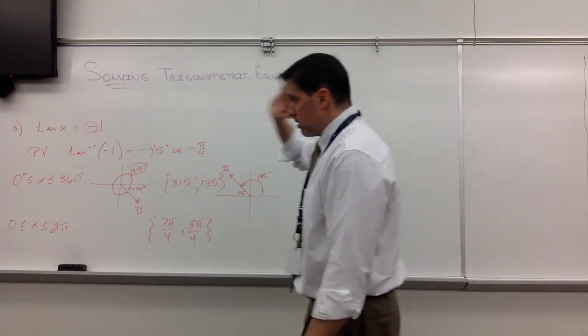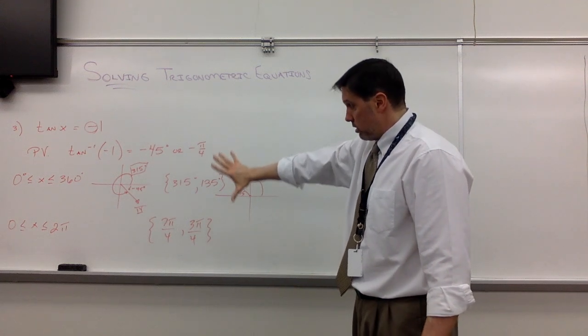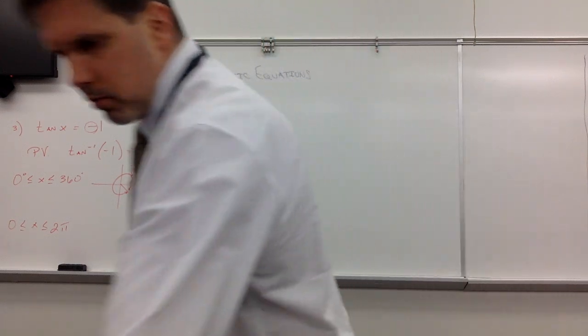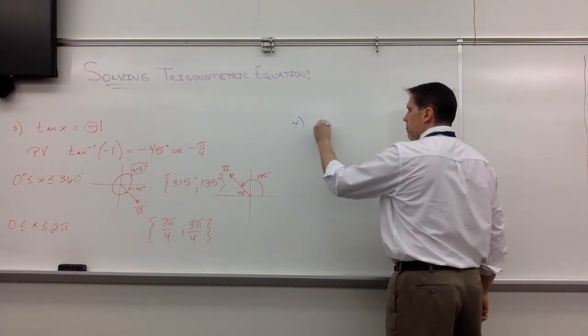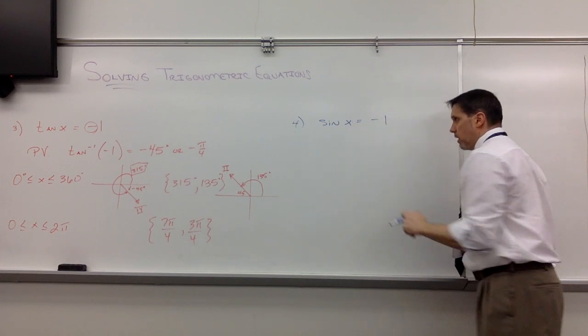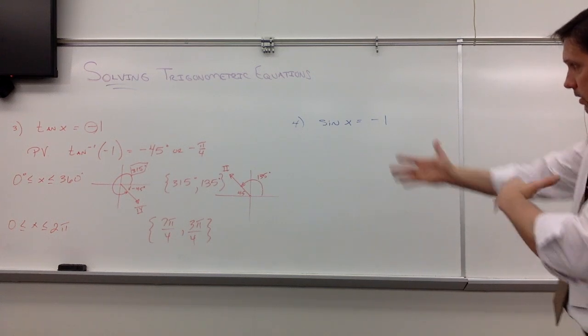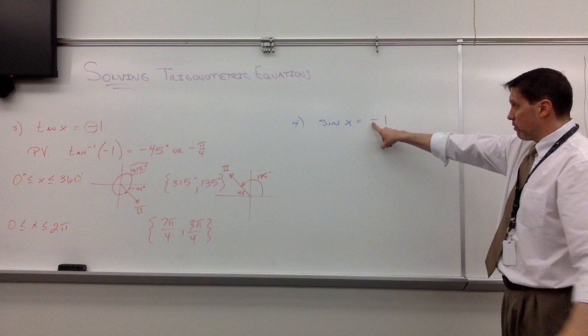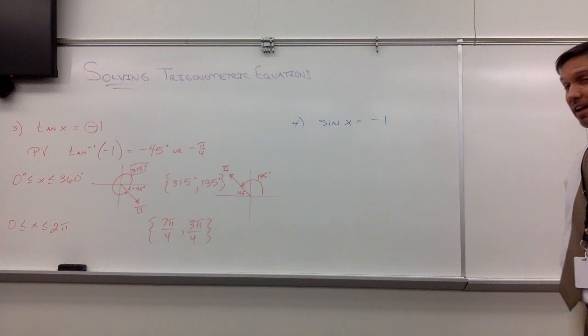I consider this the toughest part of solving trigonometric equations: handling it from these basic equations. I do want to do one where we do come out with a quadrantal. Already a spoiler alert. Let's say we had number 4: sine of x equals negative 1. Now, again, your calculator will figure this one out. And we say we're either going to quadrant 1 or quadrant 4. Quadrant 4 if it's negative. But that's kind of a misnomer there because when you're dealing with a quadrantal angle, you're not in any particular quadrant.